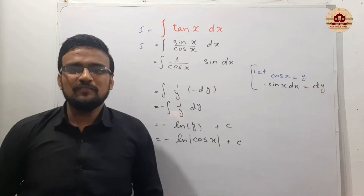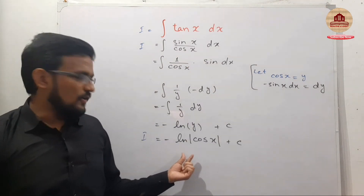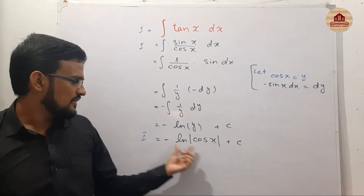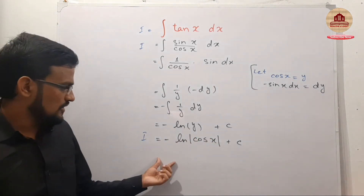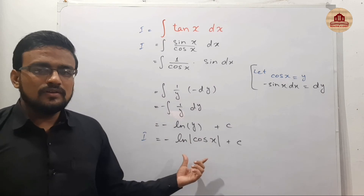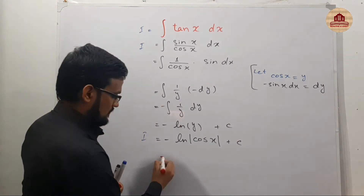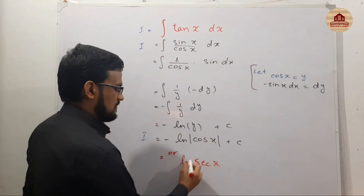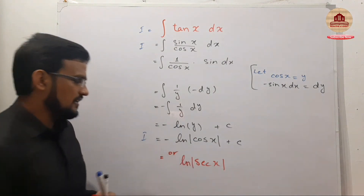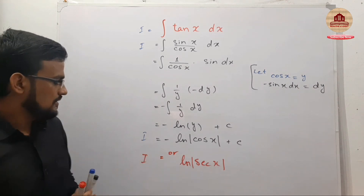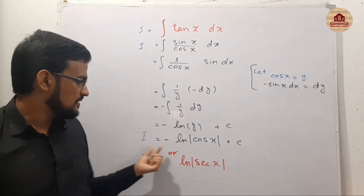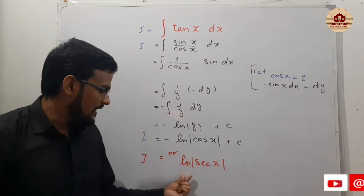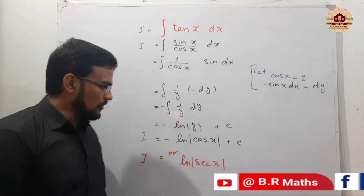So the integral of tan(x) is negative ln of cos(x) plus C. You can also write this in the form ln of secant(x) plus C. Both forms are valid results — negative ln of cos(x) and ln of sec(x) are equivalent answers.